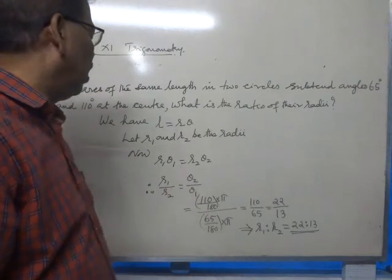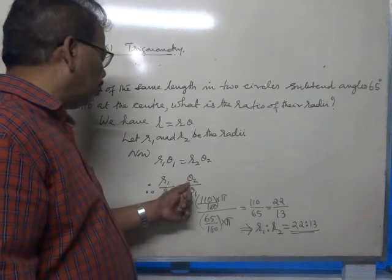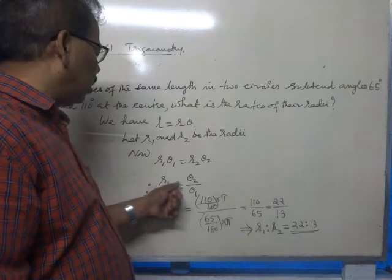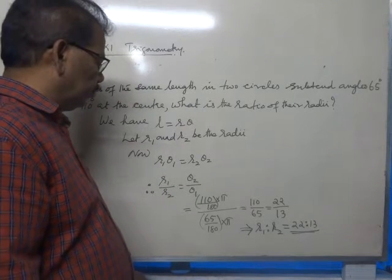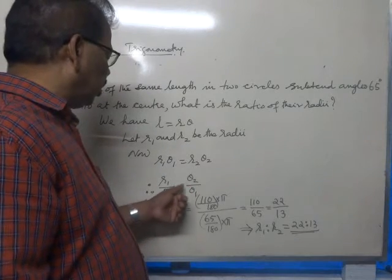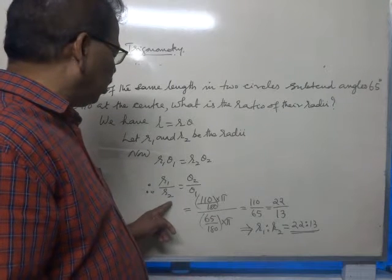Since the arc lengths are equal, R1 theta-1 equals R2 theta-2. Therefore, R1 by R2 will be theta-2 by theta-1. R1 by R2 equals theta-2 by theta-1.